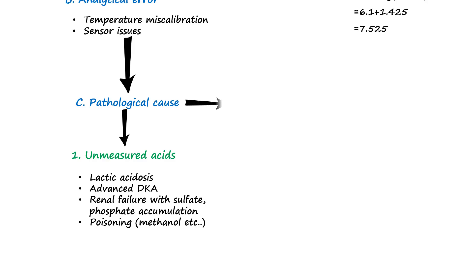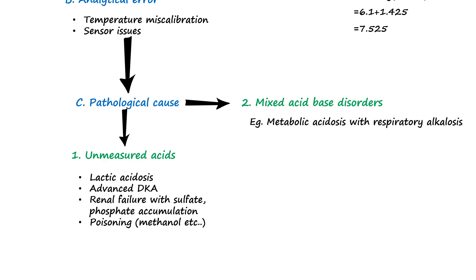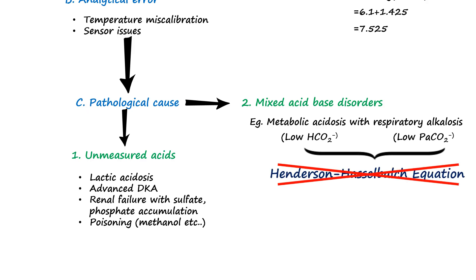Mismatch is also seen in mixed acid-base disorders where multiple primary disturbances affect the bicarbonate and carbon dioxide levels simultaneously and unpredictably. For example, if a patient has both metabolic acidosis from sepsis and respiratory alkalosis from hyperventilation, the bicarbonate may be low and the carbon dioxide may also be low, but not in a manner that maintains a predictable ratio. Therefore, in mixed disorders, more advanced acid-base analysis methods such as calculating the anion gap and using delta-delta assessment are needed to understand the true underlying problems. We will discuss them in subsequent videos.